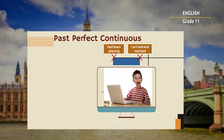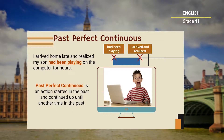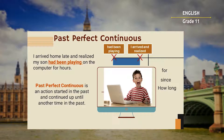Let's go to the next narrative sentence: I arrived home late and realized my son had been playing on the computer for hours. The period of time during which my son had been playing before I arrived matters. This tense is used to emphasize the duration of an action that was completed before another action or event in the past. We tend to use the following time expressions with the past perfect continuous: for, since, how long, by the time, when, before.